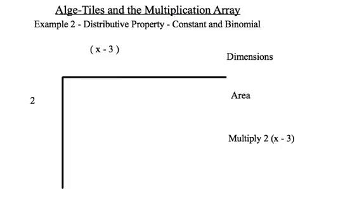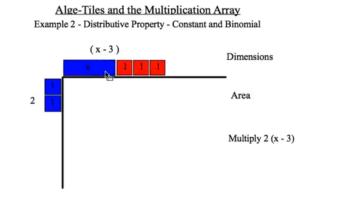Example 2. I would like to multiply 2 times x minus 3. So, now I have a negative term involved here. So, to represent 2, again, I will use two blue singles from the algebra tiles. And x minus 3 will look like this.